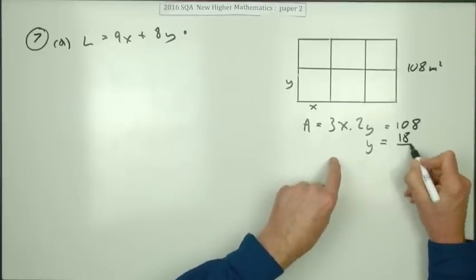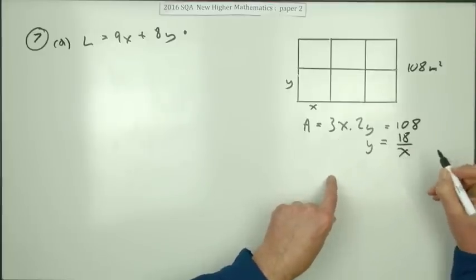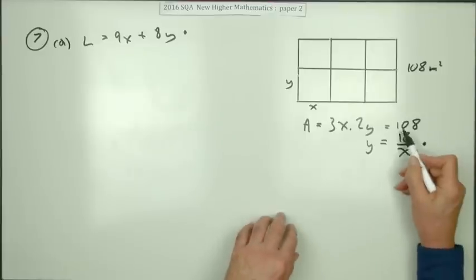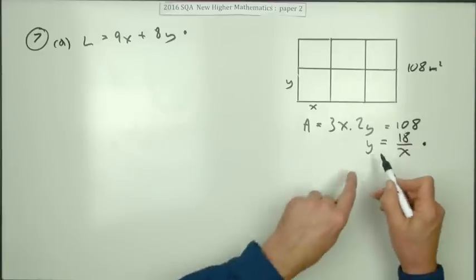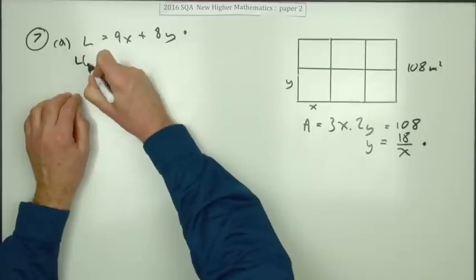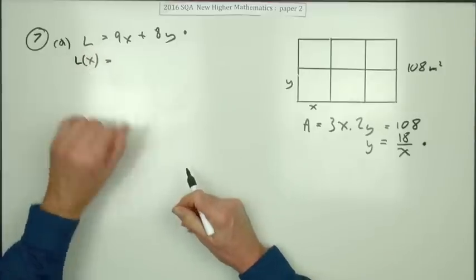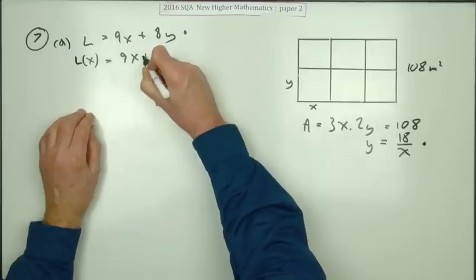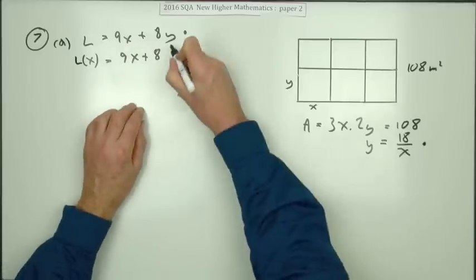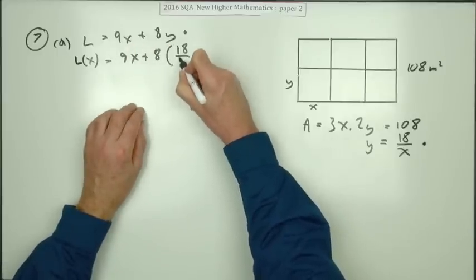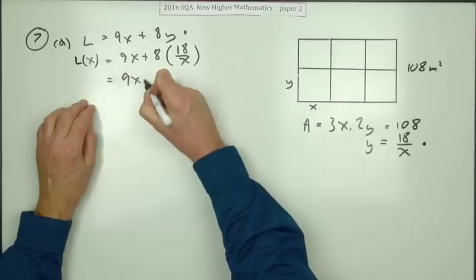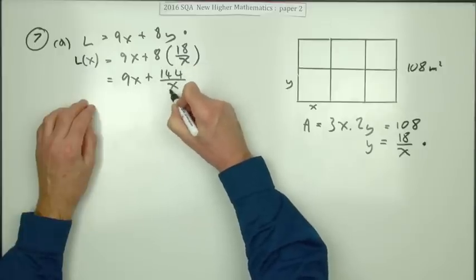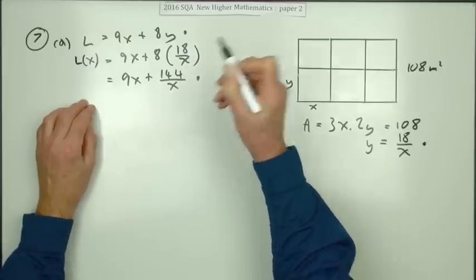So rearranging it to read y equals, would be divide by 6, which is 18 over x. Doing that gets to the second mark. You don't need to have simplified that though, you could have left it as 108 over 6. And then putting that back into this will give you an expression solely in terms of x. So you've got 9x plus 8 times 18 over x, which is 9x plus 144 over x as required for the third mark.